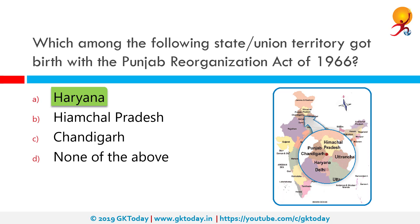A union territory — the city of Chandigarh — was also carved out, which was to serve as the capital of both the remaining Punjab and Haryana. Chandigarh did exist before that too, but it fell on the border between Haryana and Punjab, so it was granted the status of a union territory and became their common capital.